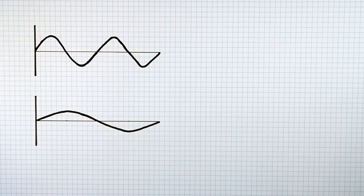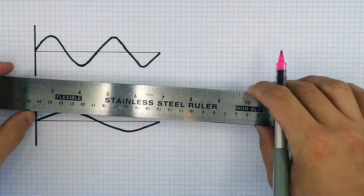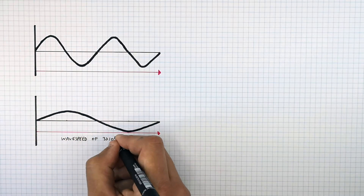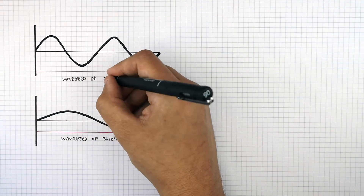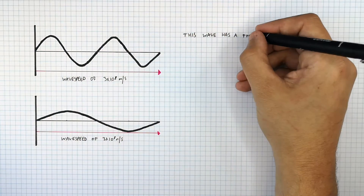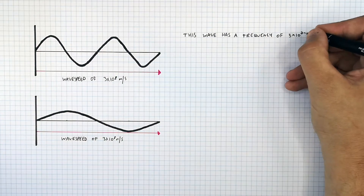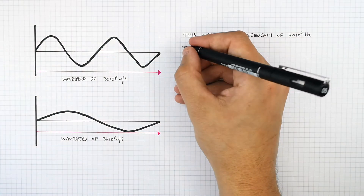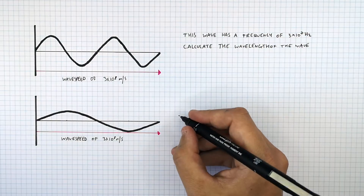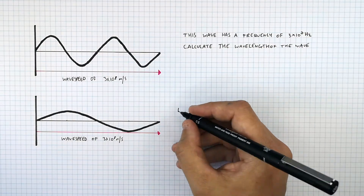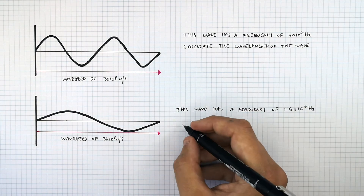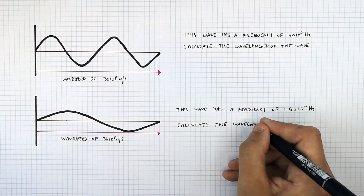What we have here are two waves, and both of them are travelling with a wave speed of 3 times 10 to the power of 8 metres per second. The top wave has a frequency of 3 times 10 to the power of 7 hertz, and you need to calculate its wavelength. The second wave has a frequency of 1.5 times 10 to the power of 7 hertz, and you need to calculate its wavelength too.